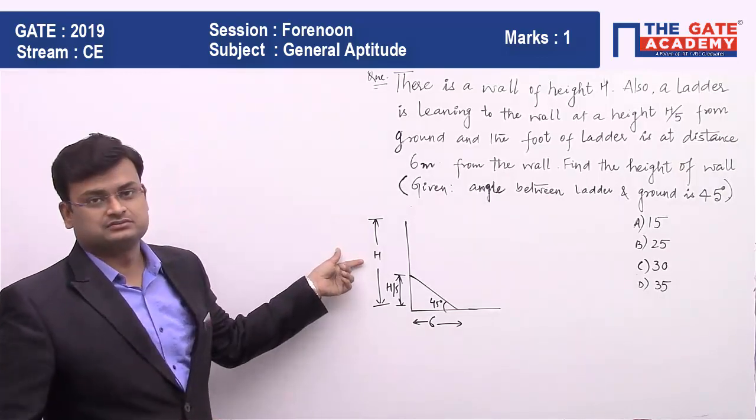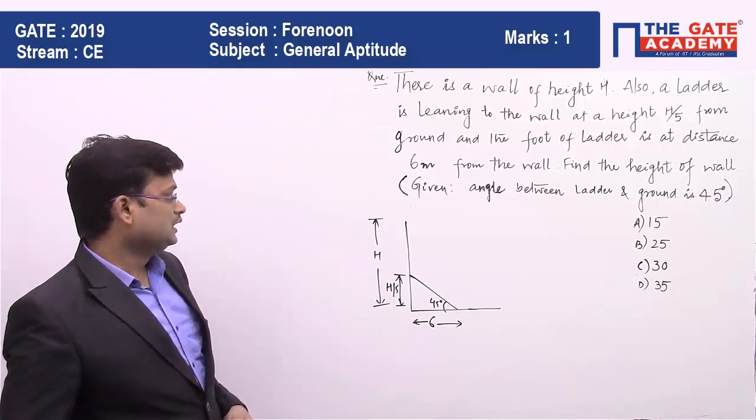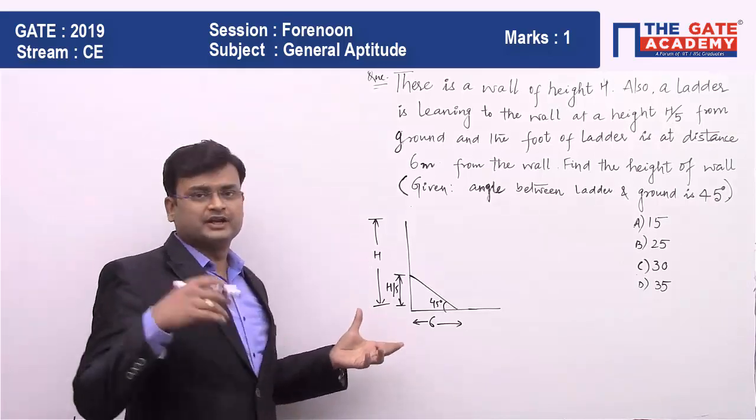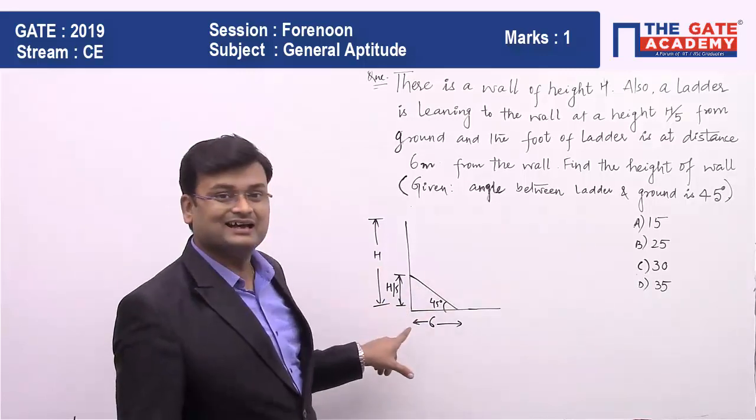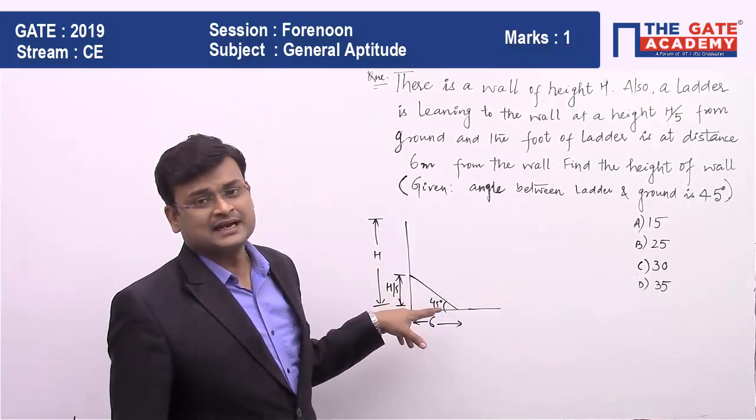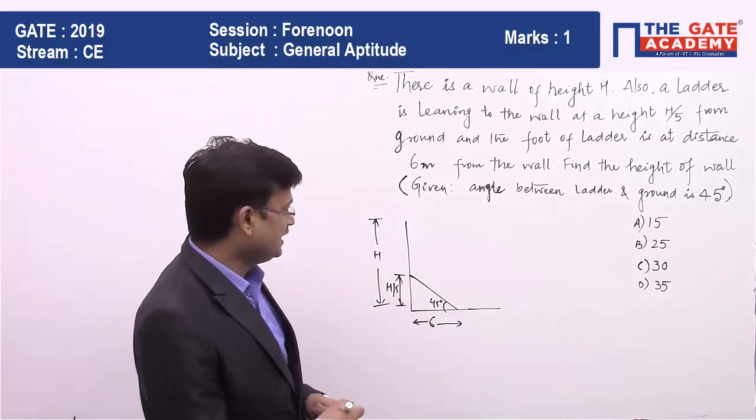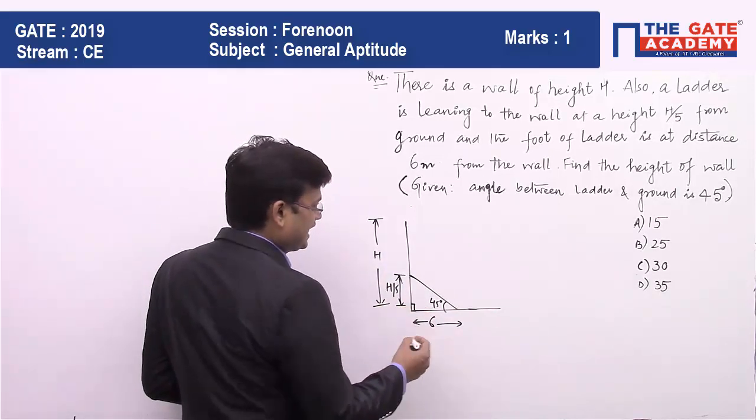Now I am sure many of you got the trick also. This particular triangle is a 45-90-45 triangle where I can confidently say that this length and this length will be equal.